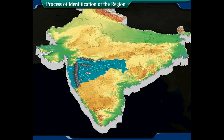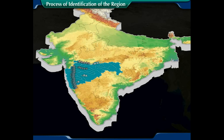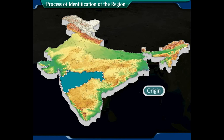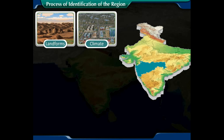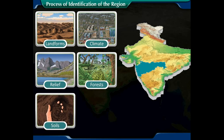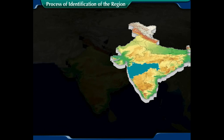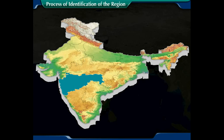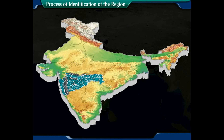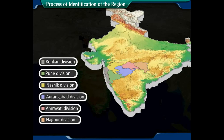Physical regions can be identified on the basis of physical factors like origin, location, landforms, climate, relief, forests, soils, and minerals. They are divided by natural boundaries like rivers, mountains, and hill ranges, and their boundaries are drawn roughly on maps because they mostly exist as transitional zones. Besides physical regions, we also have political and administrative regions, which have well-demarcated boundaries shown accurately on the map.